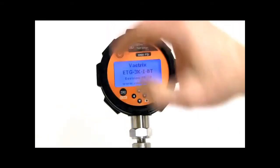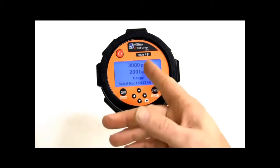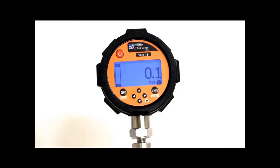To turn the unit on, press it down and hold the power key. The unit will boot up and show you the model, revision, PSI and bar value and serial number.